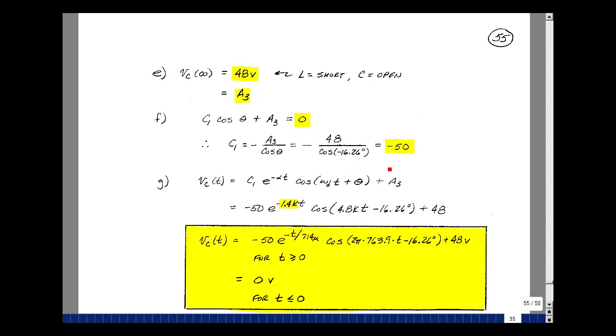So now our solution, then, is C1, which is minus 50, e to the minus alpha, which is 1.4k times t, cosine of 4.8 kiloradians per second times t, and the angle is minus 16.26 degrees, and then plus 48 volts. Let's write this as the reciprocal of 714 microseconds, and then we can interpret this in terms of five time constants.